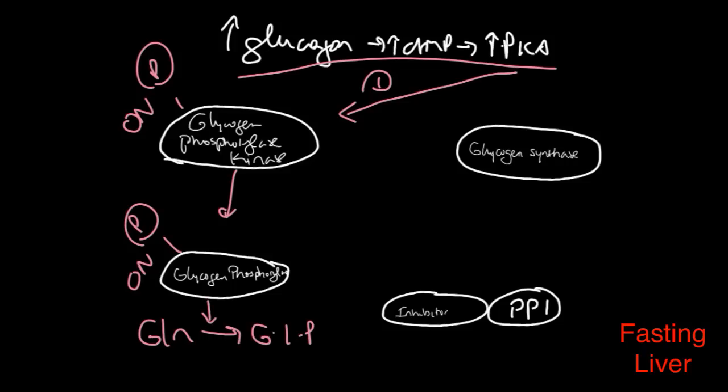And now glycogen phosphorylase will cleave one glucose molecule at a time to produce glucose 1-phosphate. If you're mobilizing your glycogen, you want to turn off the synthesis. So that's the second thing that PKA will do.